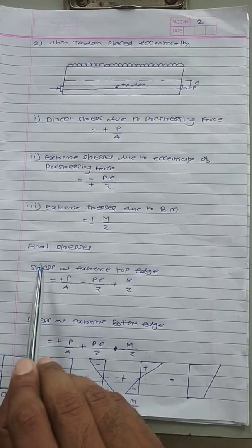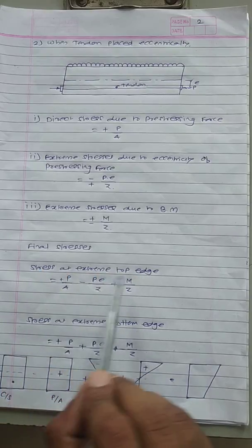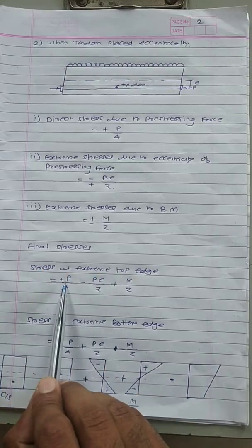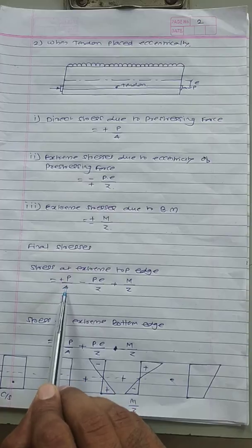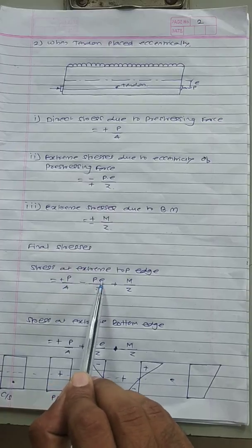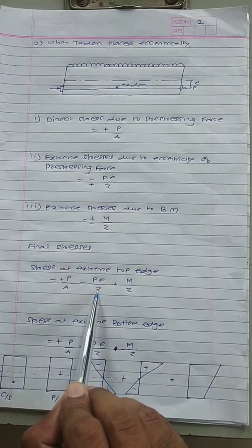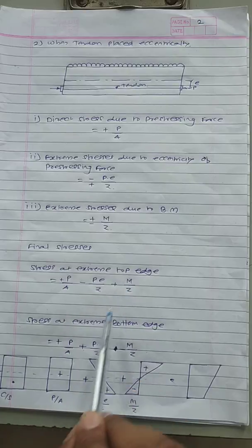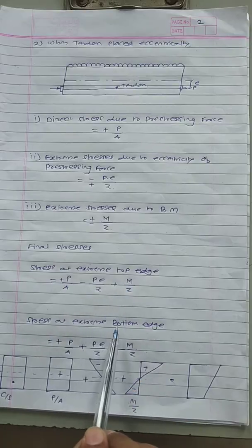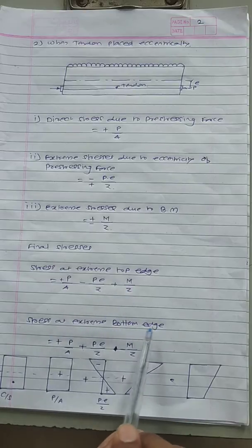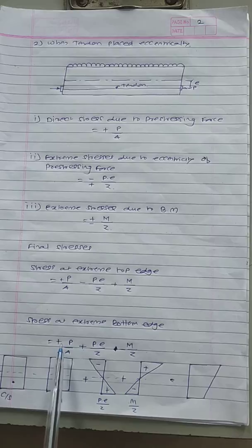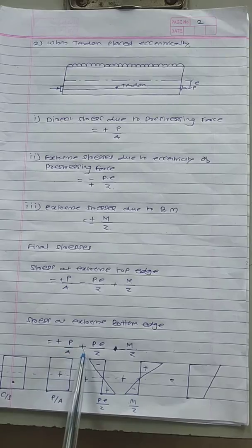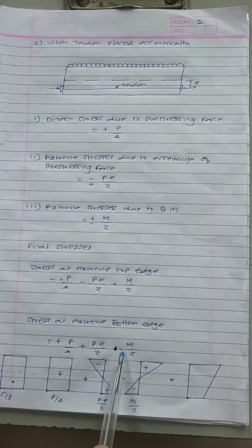The final stresses at the extreme top edge are: direct stress P/A (positive), minus PE/Z (negative), plus M/Z (positive). The stress at the extreme bottom edge is: P/A (positive), plus P×E/Z (positive), and minus M/Z.